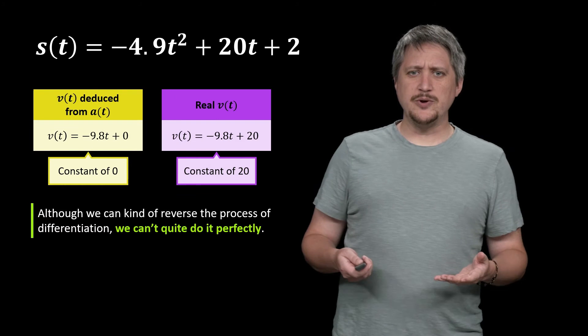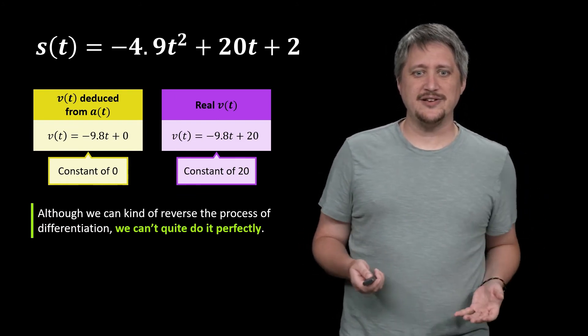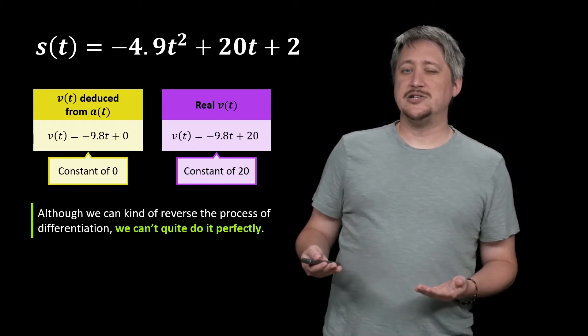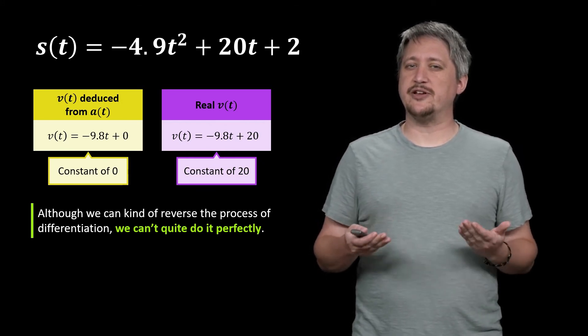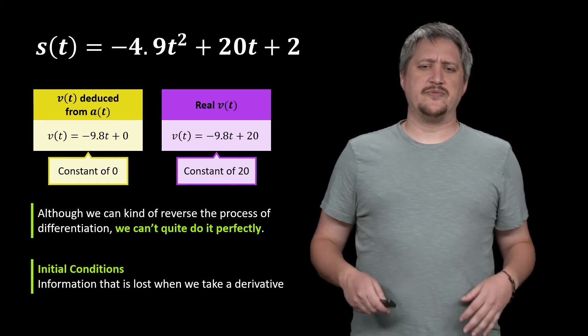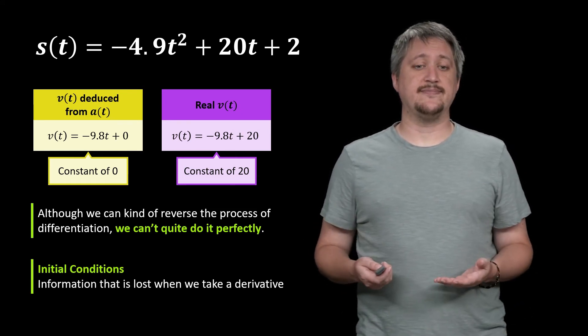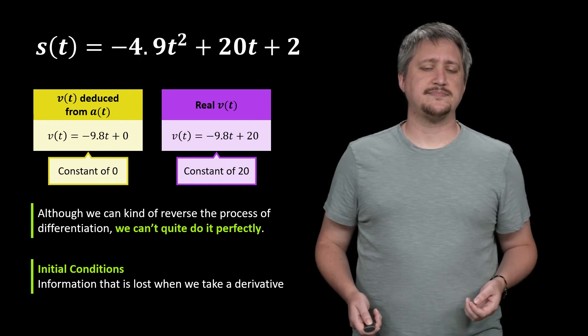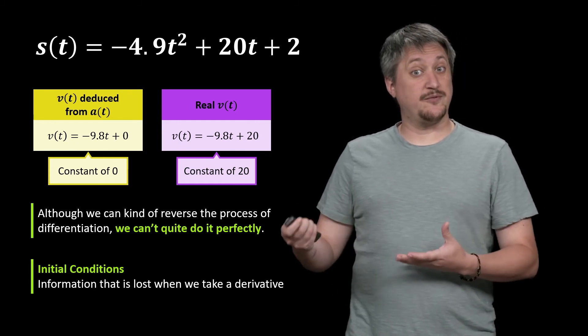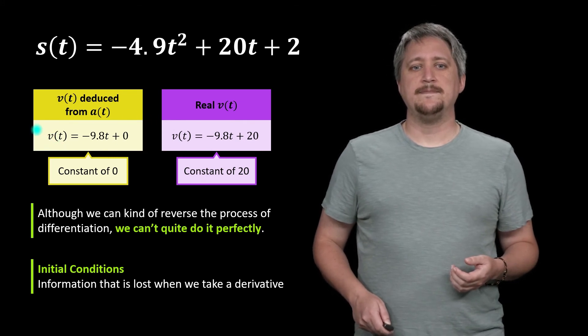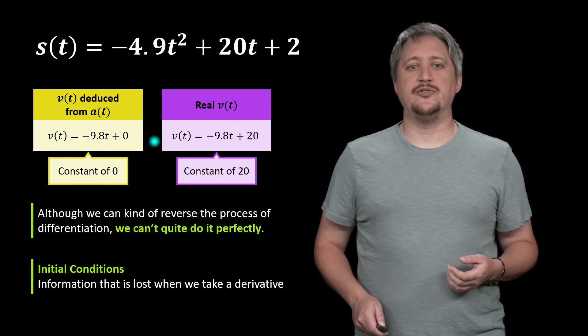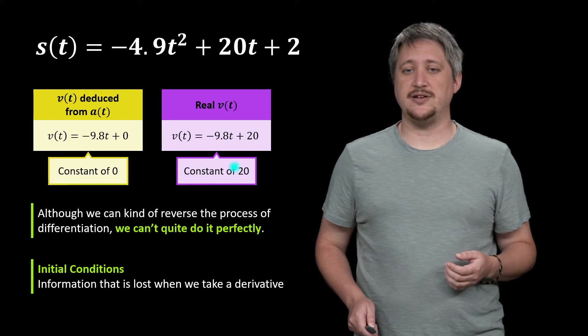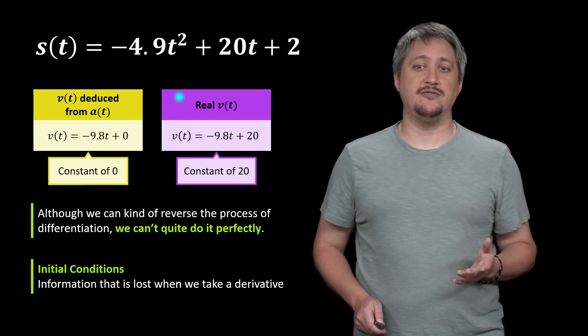So although we can kind of reverse this process, we can't quite do it perfectly. The problem is we can work our way back to a point, but we don't really know if there was a constant attached to our function. So this kind of thing is called an initial condition. Initial condition is information that was lost as a result of taking this derivative. In terms of vocabulary, this v of t that we deduced would be called an antiderivative. This is an example of a function whose derivative would be the same as what we wanted for the a of t.